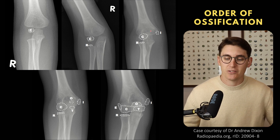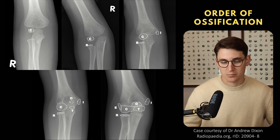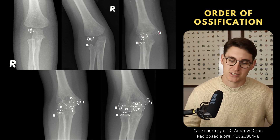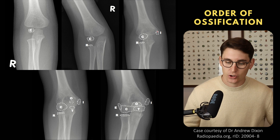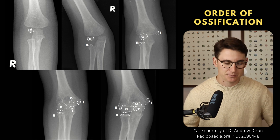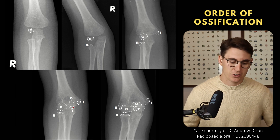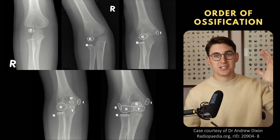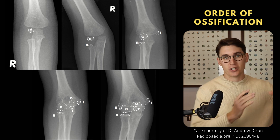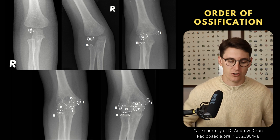Then we develop our internal or medial epicondyle. We know that the radius is lateral and our ulna is medial, so it's easy to remember that the medial side is on this side. So: capitellum, radial head, internal or medial epicondyle. Then we have our trochlea and our olecranon developing at very similar times. Our trochlea is part of the humerus — not part of the ulna. Our olecranon is part of the ulna; it goes into the olecranon fossa posteriorly and is an attachment for our tricep muscles. Our trochlea allows for the trochlear notch of the ulna to, like a pulley, rotate in that hinge joint, allowing that smooth hinging motion of the elbow joint.